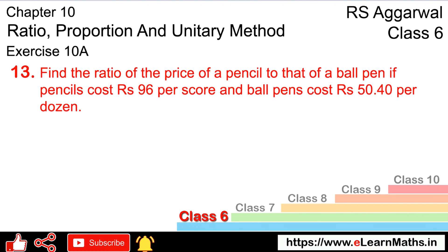Let's do question number 13 of exercise 10A, that is ratio, proportion and unitary method. Question number 13: find the ratio of the price of a pencil to that of a ball pen. If the pencil costs Rs. 96 per score — a score means 20 items — so Rs. 96 per score.